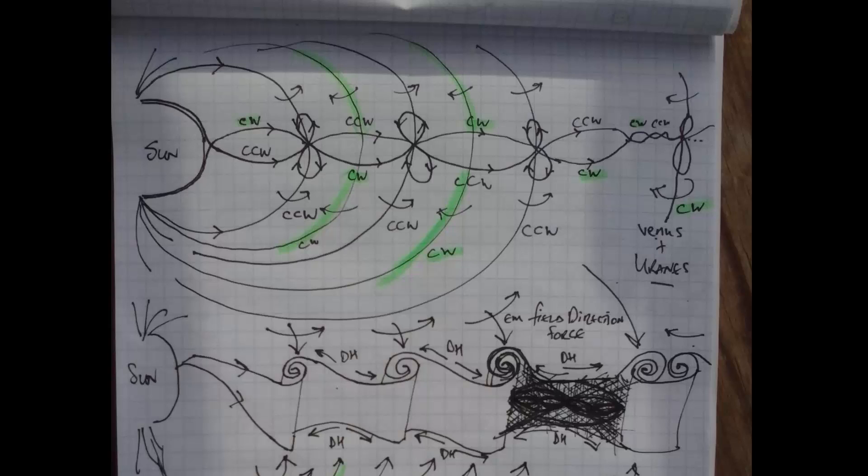At the very end there you can see Venus and Uranus, which is attached to a reversed spin as compared to the rest of the planets. This is merely because the EM field coming from the sun, when energy goes into it, it either rotates clockwise or counterclockwise.